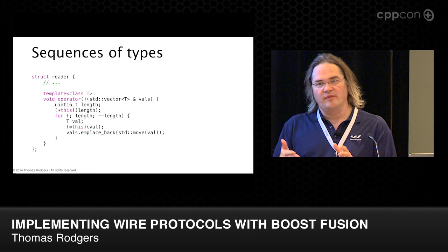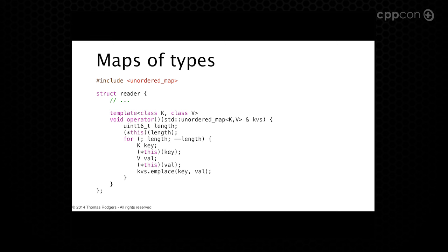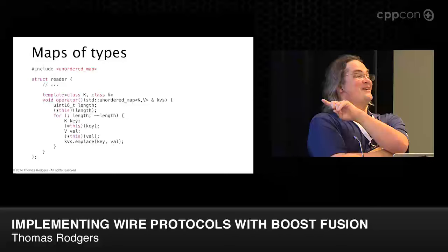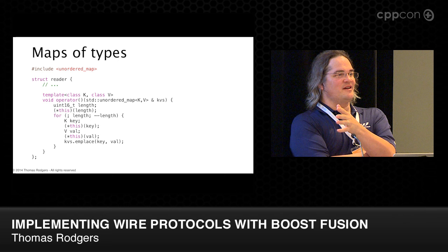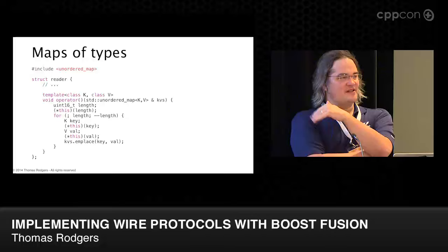Maps work similarly: read the length of the map, then for each entry read the key and the value and place them into an unordered_map. There are bounds checks being elided in the presentation — for example, if you pass in a vector bigger than is representable by the length type, you should assert that. At this point you can handle a structure with fixed-length fields at the beginning, variable-length fields, header properties, a message type, and variable-length content at the end.